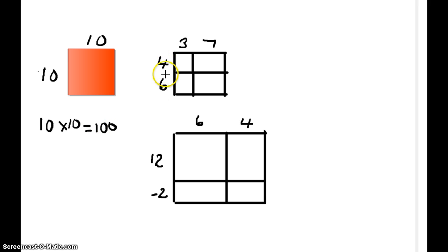Here we have 4 plus 6, which is 10, and we have 3 plus 7, which is 10. So let's take a look if by breaking this apart, we still end up with an area of 100. So 3 times 4 is 12, 4 times 7 is 28, 6 times 3 is 18, and 6 times 7 is 42. If we add all those up, I think you will discover that we get 100.